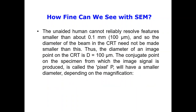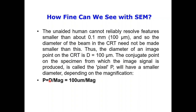The unaided human eye cannot reliably resolve features smaller than about 0.1 millimeters. So the diameter of the beam on the CRT need not be matched smaller than this — the diameter of the mesh point on the CRT equals 100 microns. The conjugate point on the specimen from which the image signal is produced is called the pixel, denoted P, which has a smaller diameter depending upon the magnification. The relation is: P = D / M, where D is the CRT diameter (100 microns) and M is the magnification.